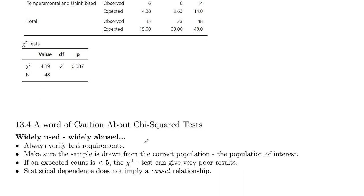Just a word of caution about chi-squared tests: they are widely used, but also widely abused. So you always want to verify test requirements. Especially, you need those cell counts to be at least five, and you want to make sure your sample is drawn from the correct population — the population that you're interested in. If an expected count does end up being less than five, your chi-squared test can give very poor results.